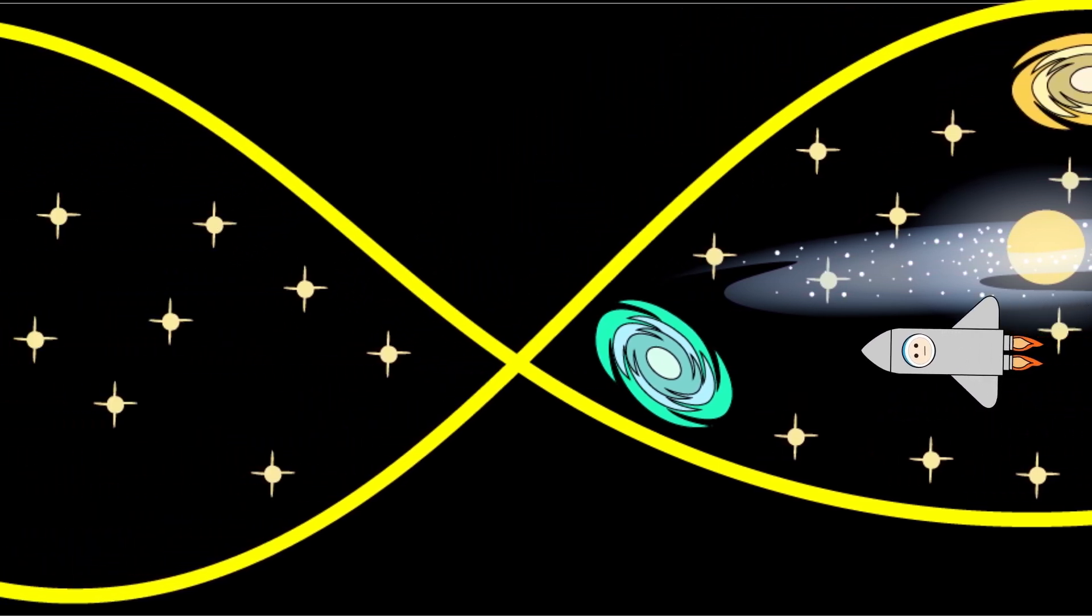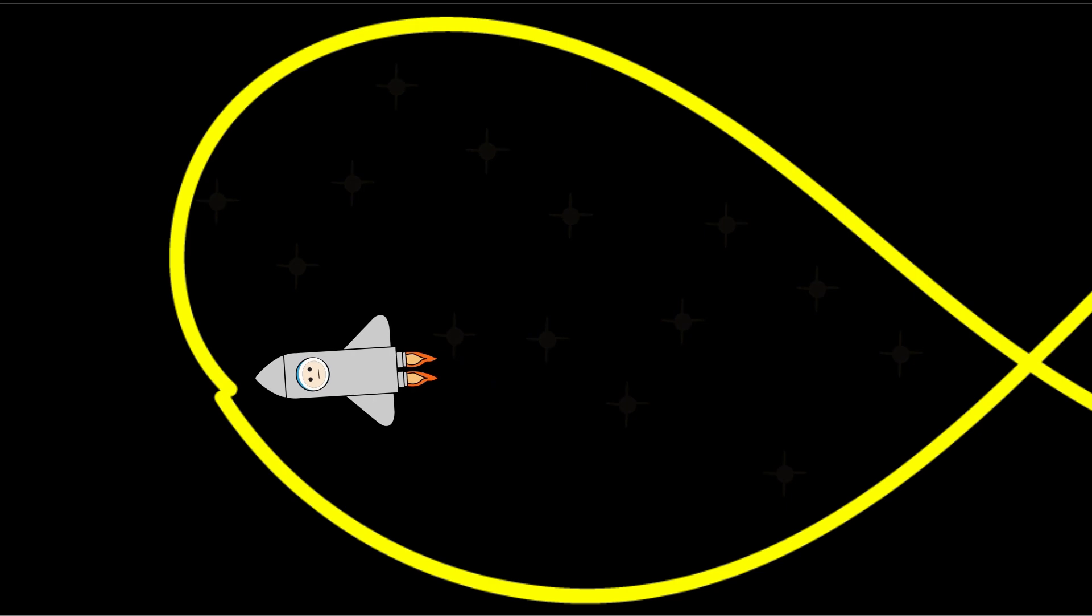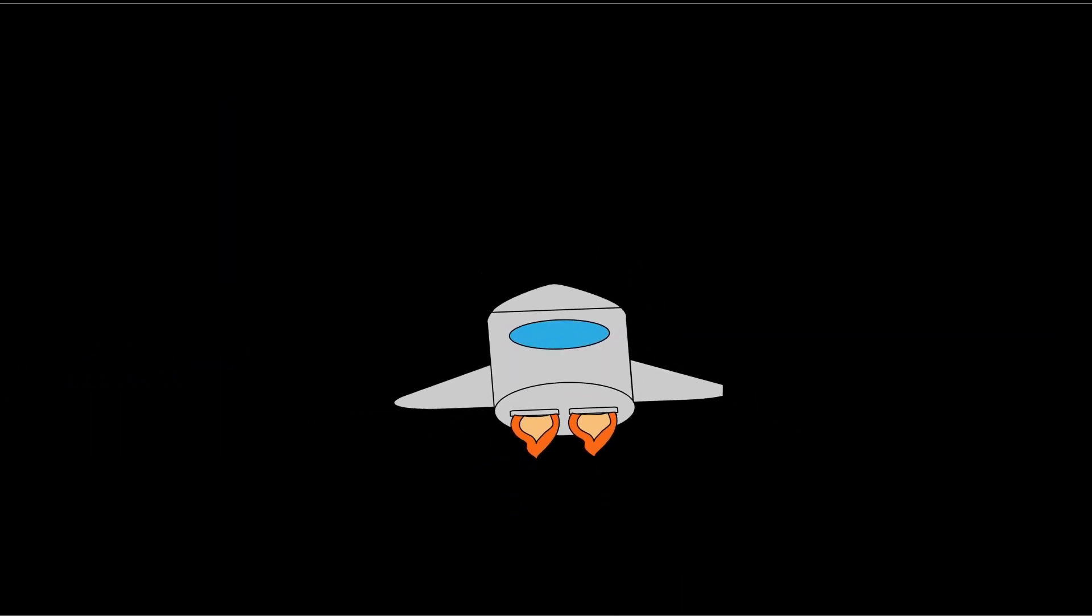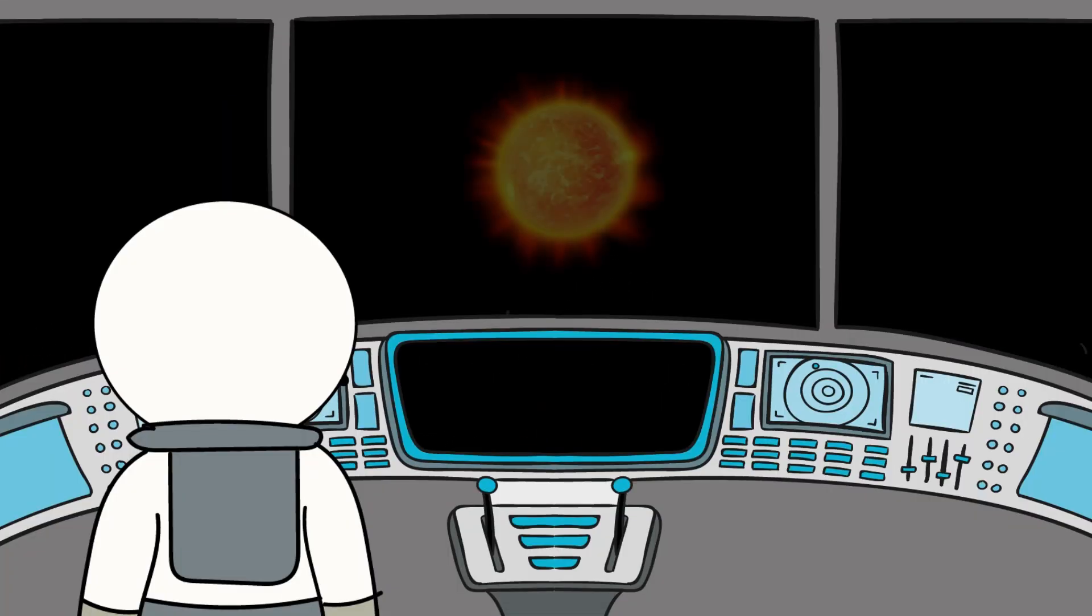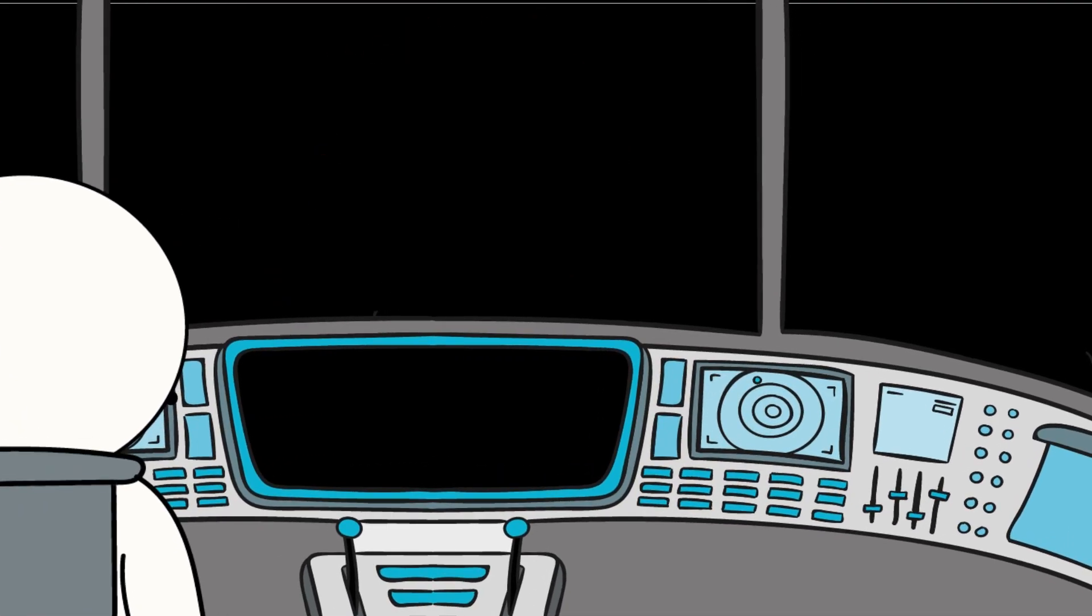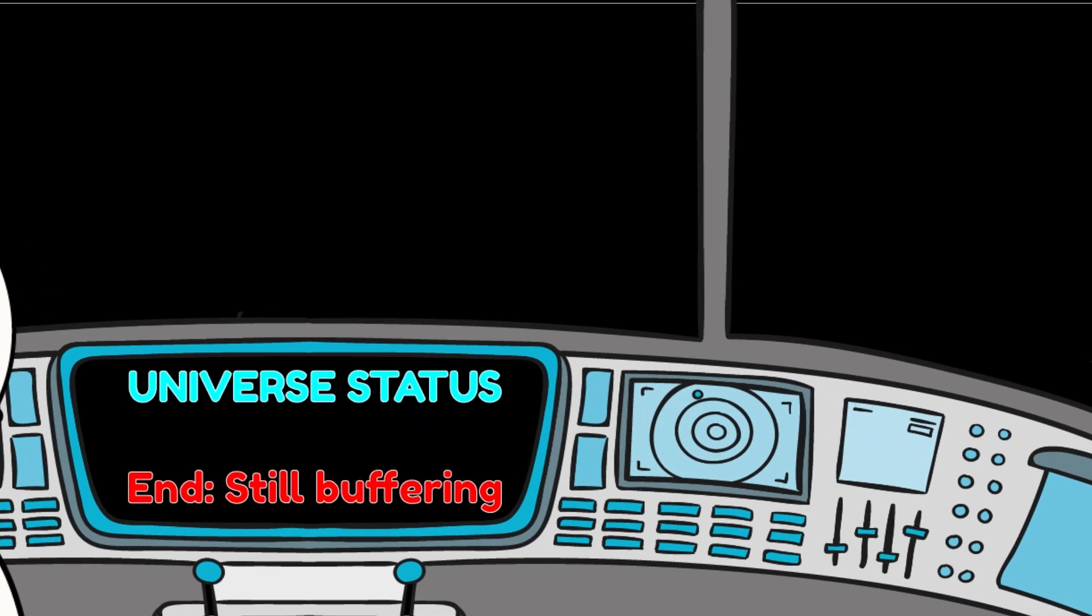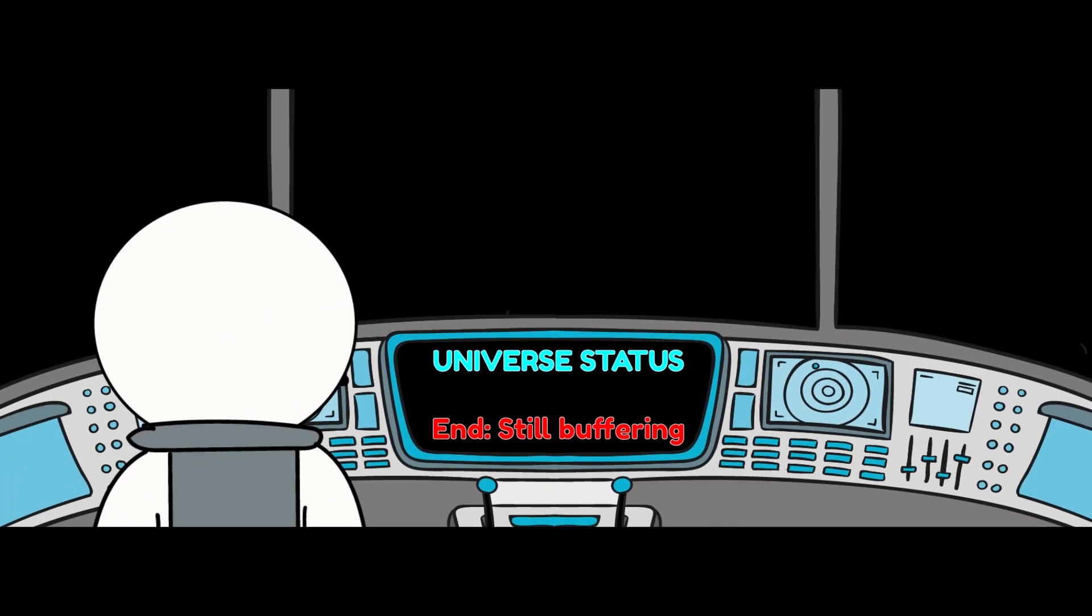People think the universe is vast because it's full of stars. Wrong. It's vast because it doesn't care if there are any. You thought you were exploring. You were just watching the universe turn itself inside out. From light to dust to silence. And in the grandest punchline of all, you'll never know how it ends. Because by the time it does, there won't be a you left to find out.